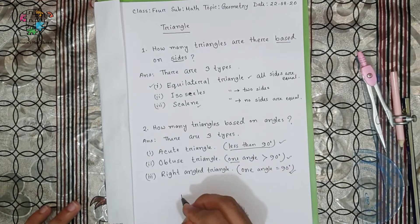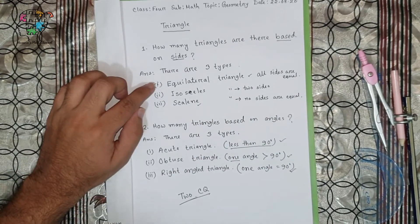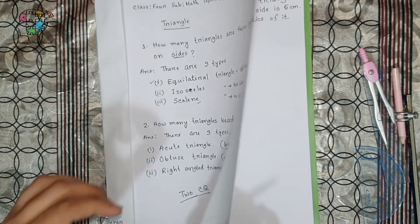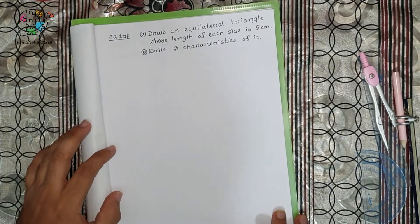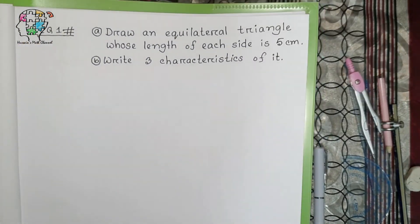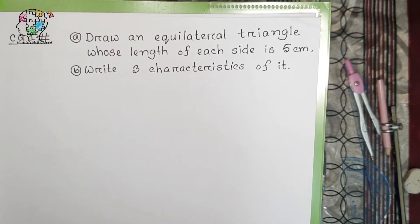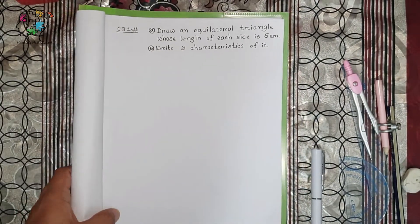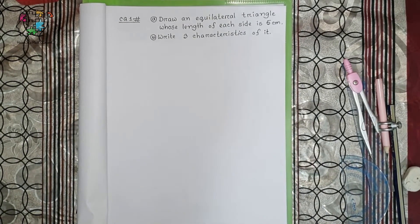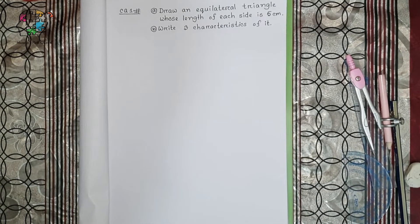Today we will learn two competency-based questions of these types. You will be given some lengths and you have to draw a triangle with those specific lengths. Question number one (a): draw an equilateral triangle whose length of each side is five centimeters. That means all sides will be exactly five centimeters. Question number (b): write three characteristics. All right, let's begin.